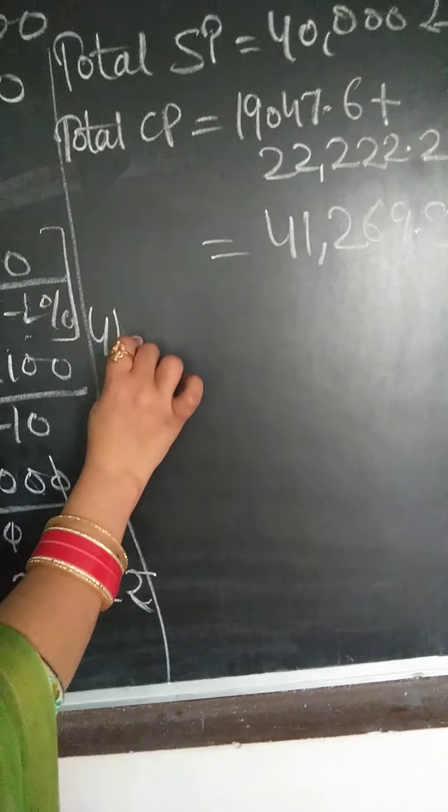Let's find the total SP, which is 20,000 plus 20,000, equals 40,000. Total CP is 19,047.6 plus 22,222.2, which equals 41,269.8. We can see that CP is greater than SP because 41,269.8 is greater than 40,000.